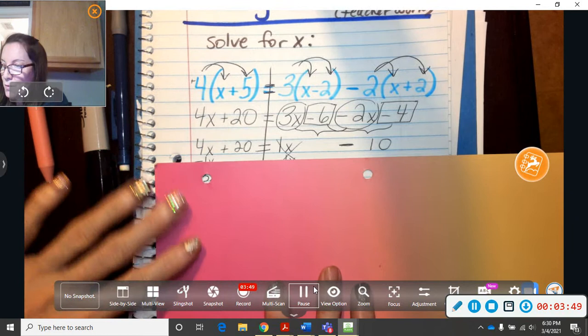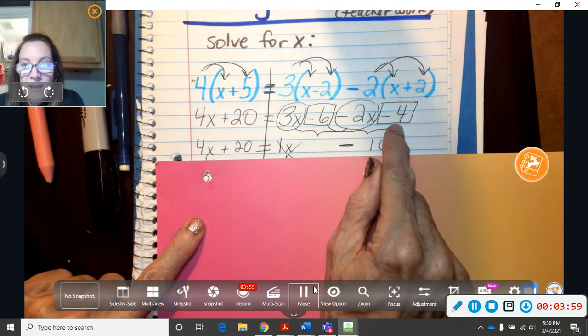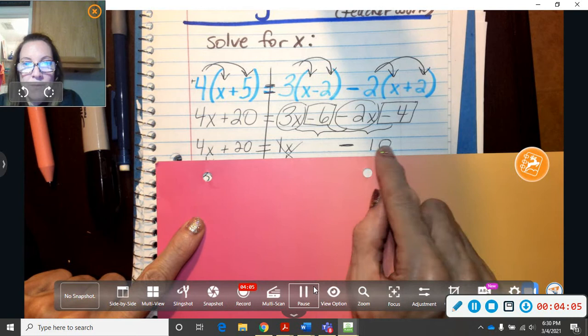Next row, I'm going to combine like terms. Put all the x's together. 3x and a negative 2x, which means the same thing as 3x minus 2x would give you 1x. Negative 6 and a negative 4 make a negative 10. Or you could say negative 6 subtract 4, either one. So now we've combined like terms.